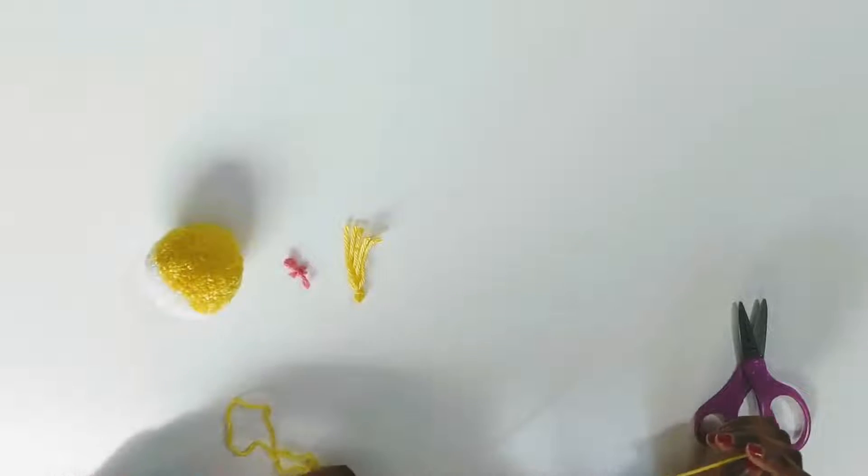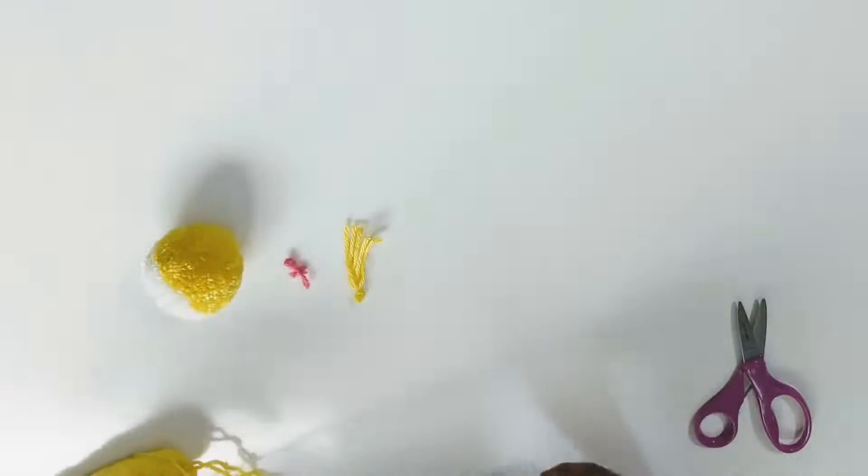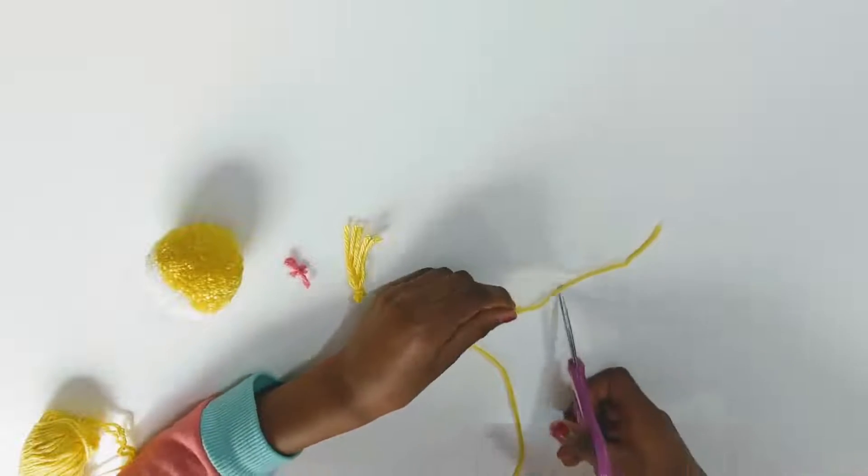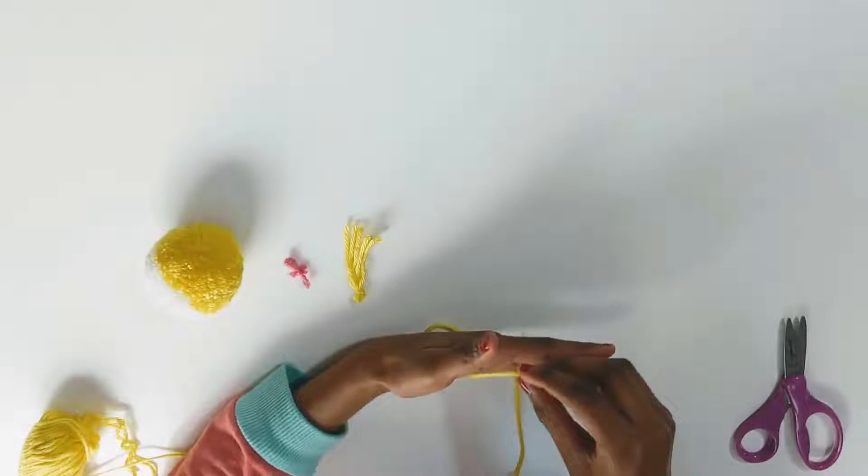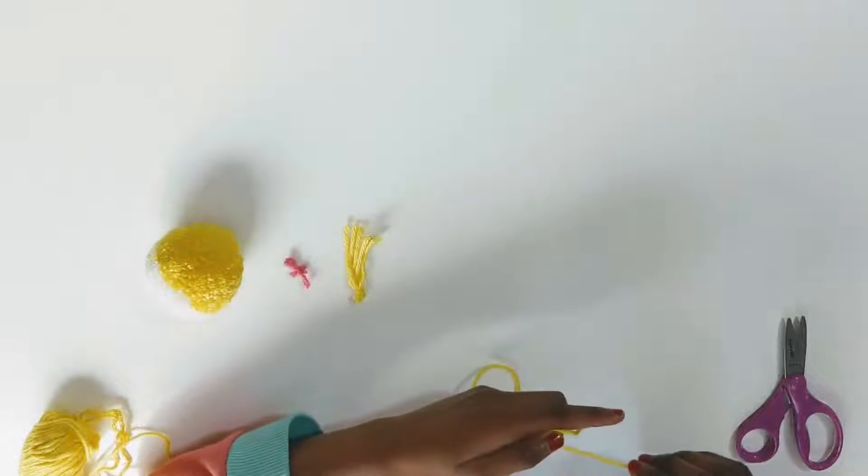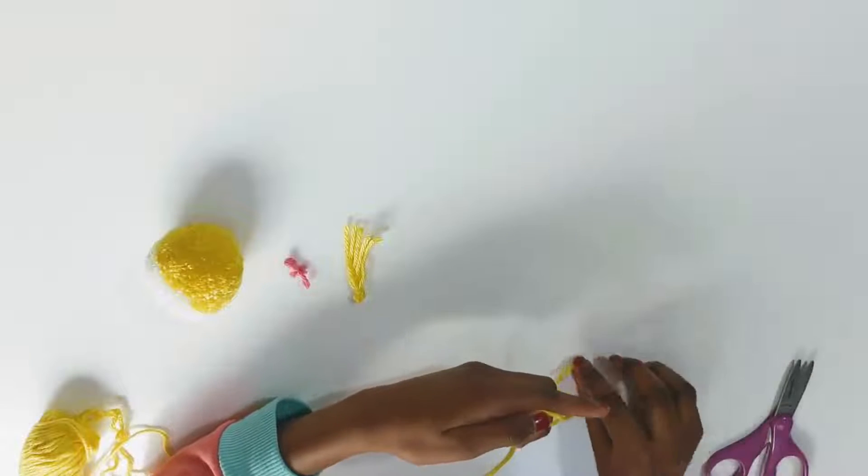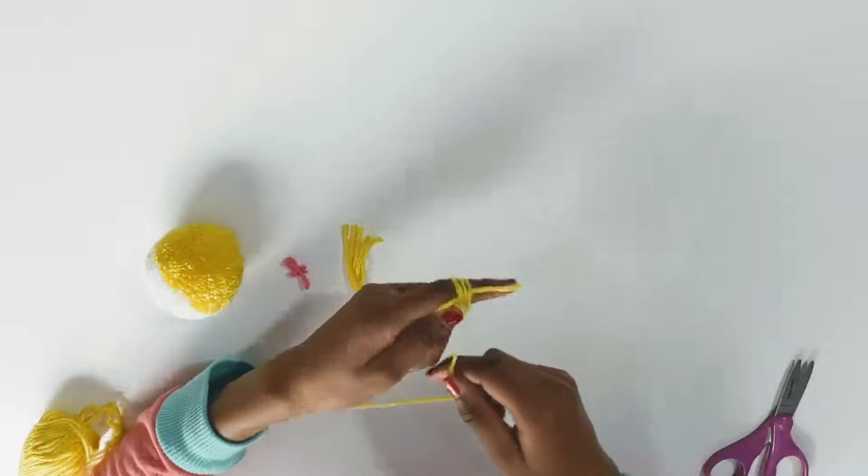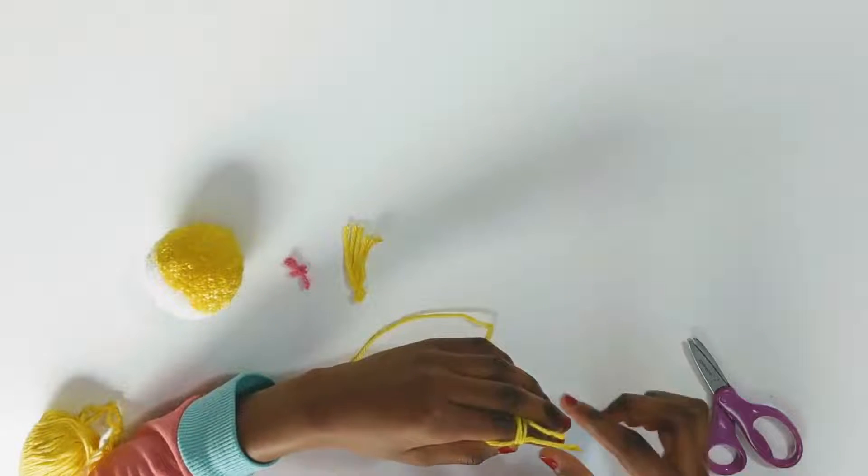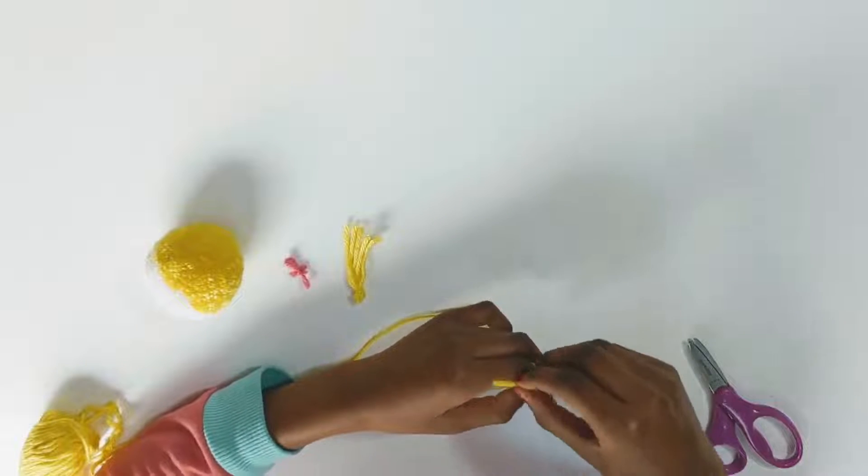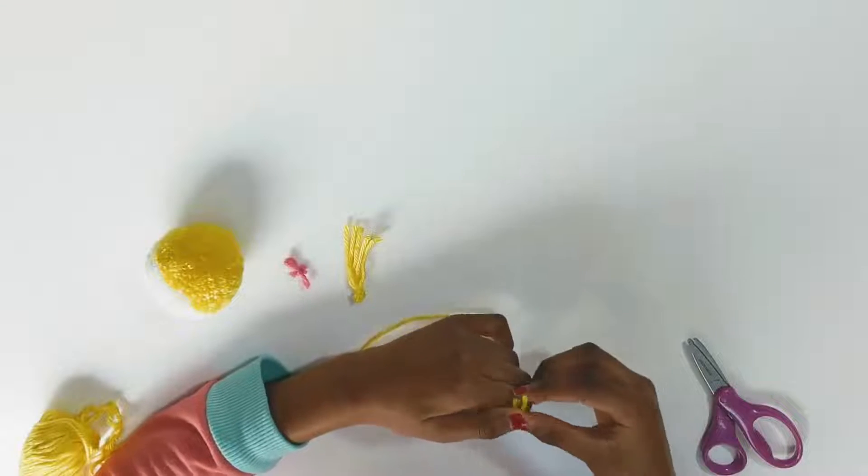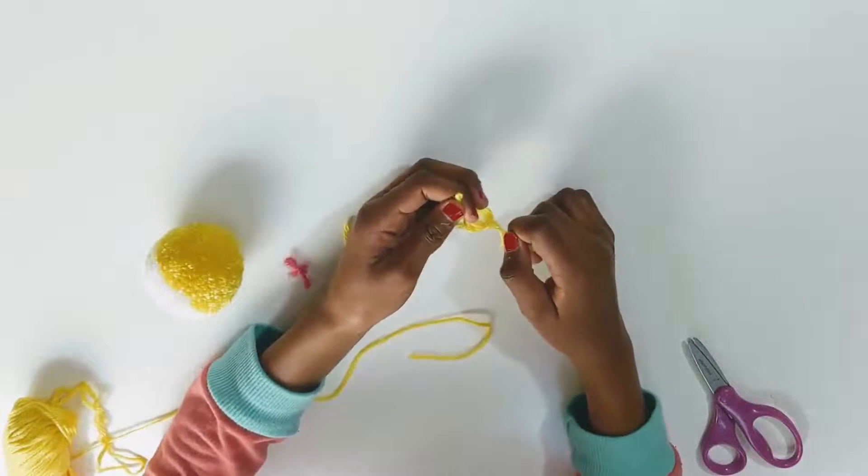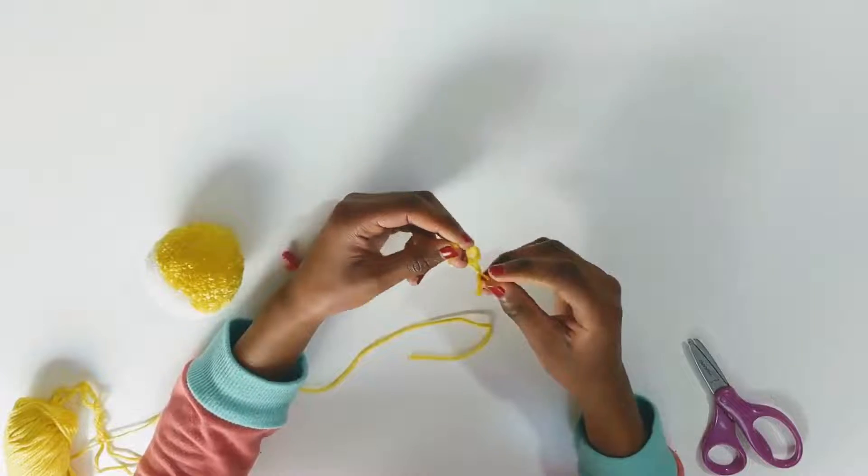Now it's time for the arms. Again, we'll be using yellow yarn. First, cut a little piece of yarn to put on top of your finger so it will be easier to tie. Then, wrap the yarn around your finger five times. Cut the yarn and then tie it. Then, remove the yarn from your finger. Tighten it and then tie it.